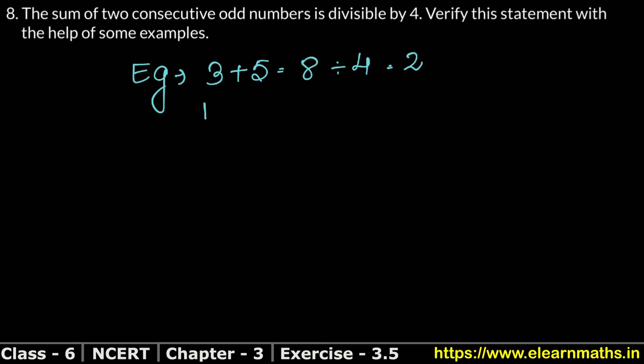Similarly, take 11 and 13 — both are consecutive odd numbers. Adding them gives 24, and 24 is also divisible by 4, since 4 × 6 = 24. Let's take one more example.